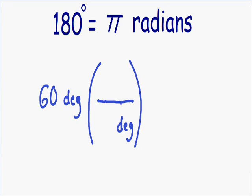In the numerator of our conversion tool, we always have to have the units that we're going to end with. Since we're going from degrees into radians, we have to have radians in the numerator. Also, the numerator and the denominator have to be exactly equal always. So we know that 180 degrees is exactly equal to pi radians. And once we do that, we are ready to officially convert.